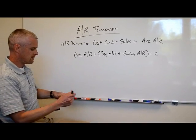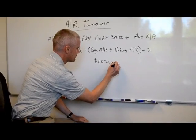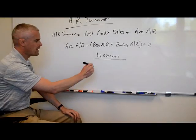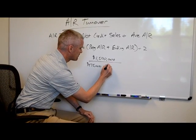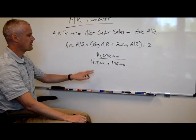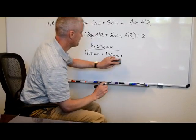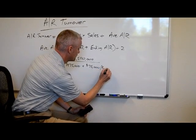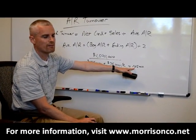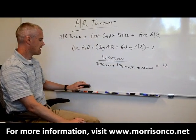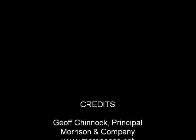Let's go through an example. Suppose your net annual sales are $1.5 million. Suppose your beginning AR is $175,000 and your ending AR is $75,000. Your average AR is $125,000. That means if this was your company, your AR will be turning over 12 times during the year.